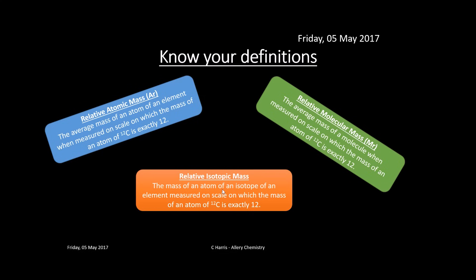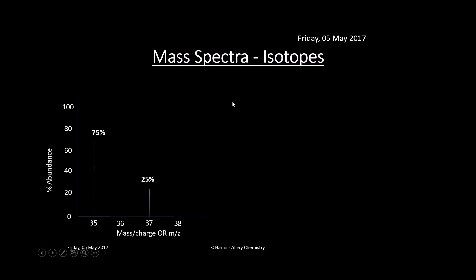You need to know these definitions — I can't emphasize this enough. Relative atomic mass is the average mass of an atom of an element measured on a scale on which the mass of an atom of carbon-12 is exactly 12. Relative molecular mass is the average mass of a molecule measured on the same scale. Relative isotopic mass is the mass of an atom of an isotope of an element measured on a scale where carbon-12 is exactly 12.